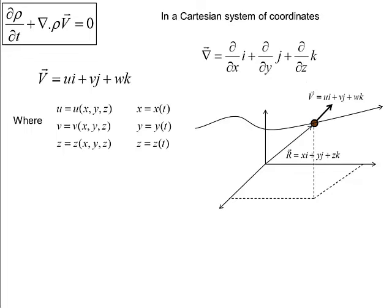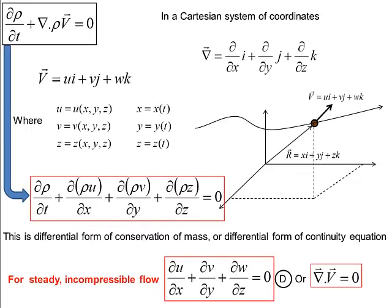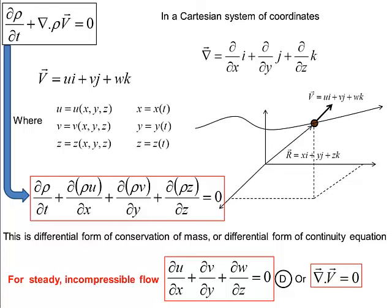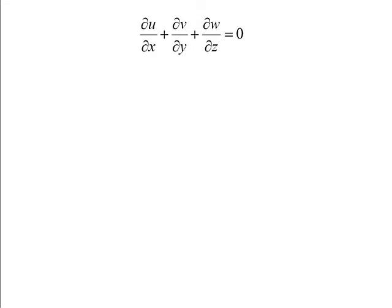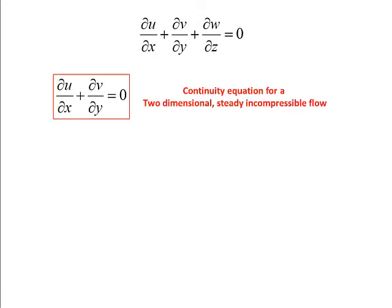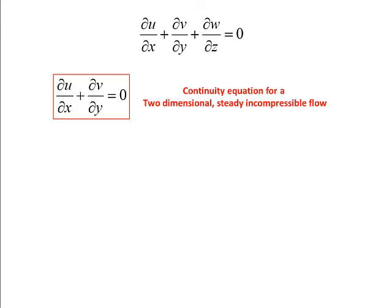Finally, this equation can be expanded and simplified for a steady incompressible flow as equation D. For two-dimensional steady incompressible flows, this equation can be further simplified. Note that this is a two-dimensional partial differential equation with two unknown functional variables, U and V. Solutions of this partial differential equation, using appropriate boundary conditions, will result in velocity field of a given two-dimensional flow system.